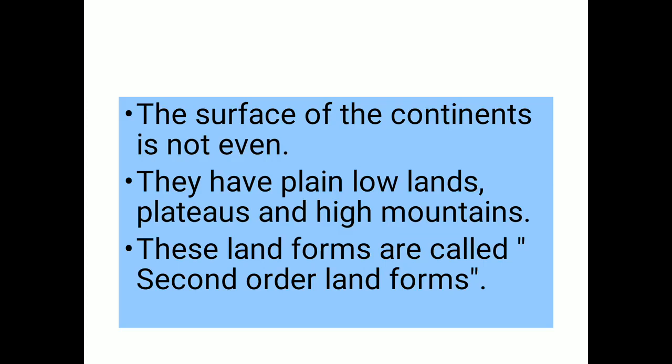Let me give a quick recapitulation. We have four natural realms: lithosphere, hydrosphere, atmosphere, and biosphere. Lito means rock; sphere means earth — what is covered completely with rocks is called lithosphere. The first order landforms, formed first on the surface of the earth, are oceans and continents. Second order landforms — plains, plateaus, and mountains — were formed secondly and are called second order landforms.